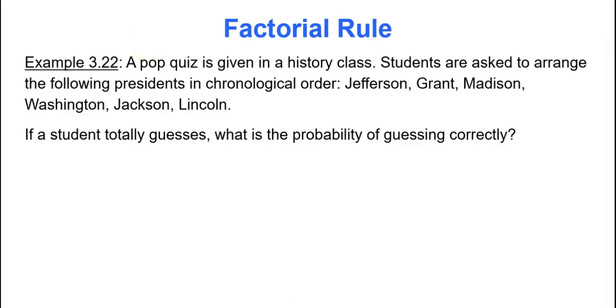So in my first example, assume you have a teacher that likes to give pop quizzes. So a pop quiz is given in a history class. Students are asked to arrange the following presidents in chronological order: Jefferson, Grant, Madison, Washington, Jackson, and Lincoln. If a student totally guesses because they were unprepared, what is the probability of guessing correctly?